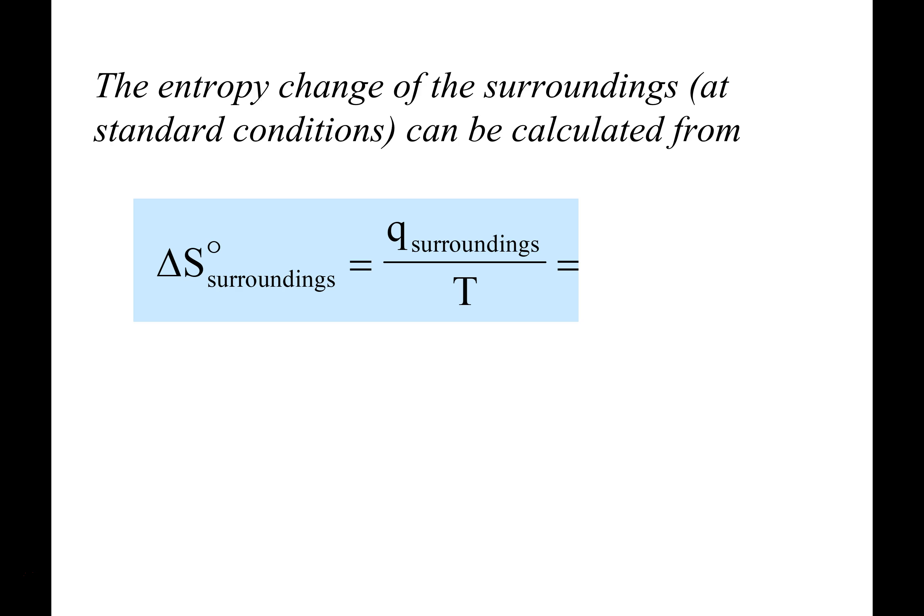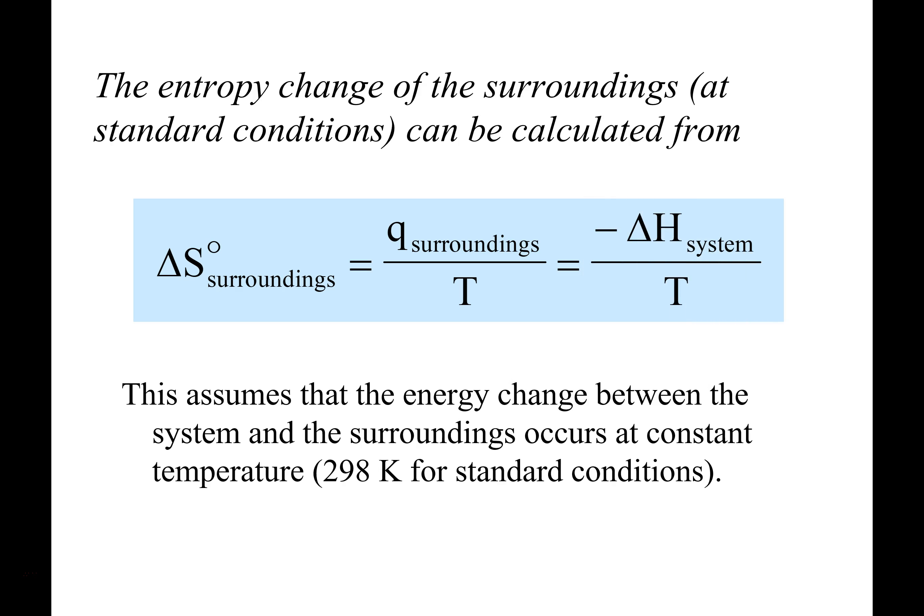The change in entropy of the surroundings: Q equals delta H, and at constant pressure, Q of the surroundings equals negative delta H of the system. So whatever change you have in the surroundings is negative whatever change you have in the system.